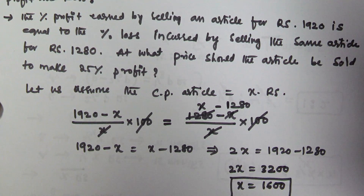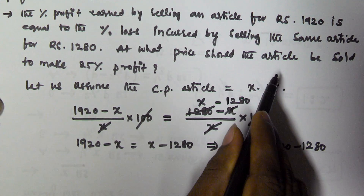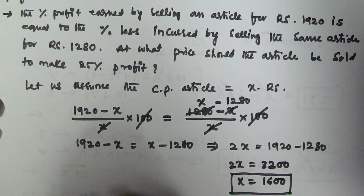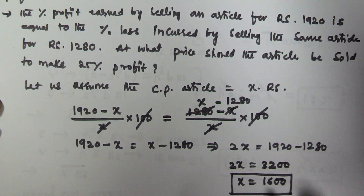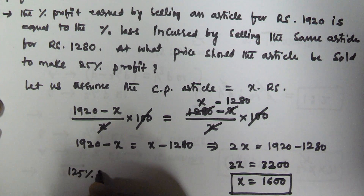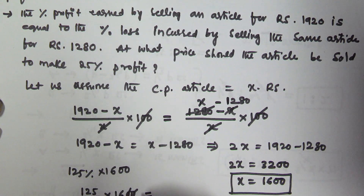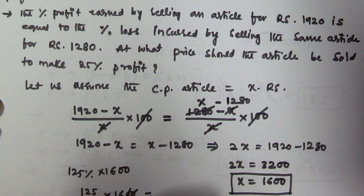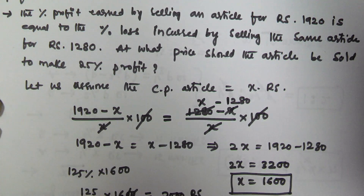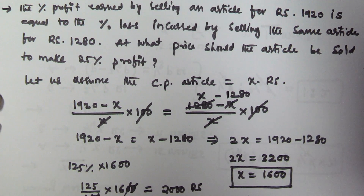The question asks at what price we should sell the article to get 25 percentage profit. That means we need to find 125 percent of 1600. So: 125/100 × 1600 = 125 × 16 = 2000 rupees. So we have to sell the article for 2000 rupees to get 25 percentage profit.